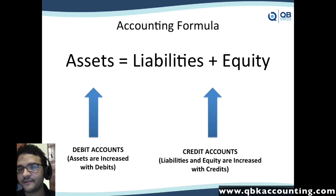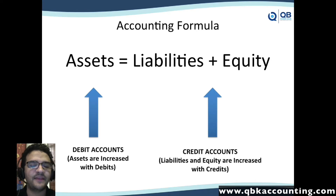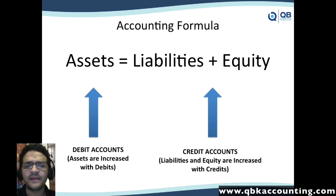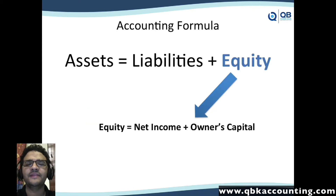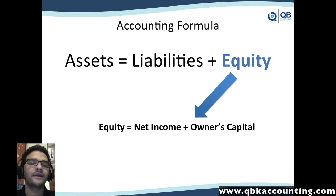The accounts on the right — liabilities and equity — those are credit accounts. That means that they are increased with credits and decreased with debits. But to go a little bit deeper, let's break this formula down in a way that equity gets actually broken down into what it's supposed to mean.